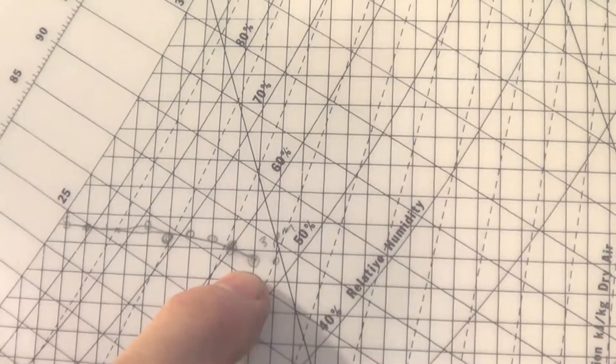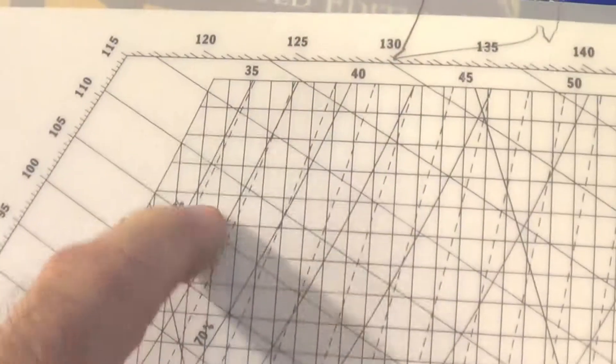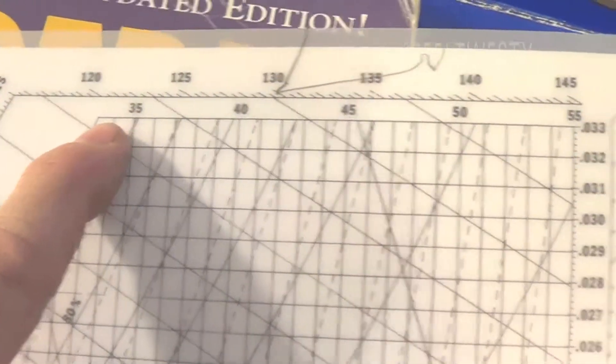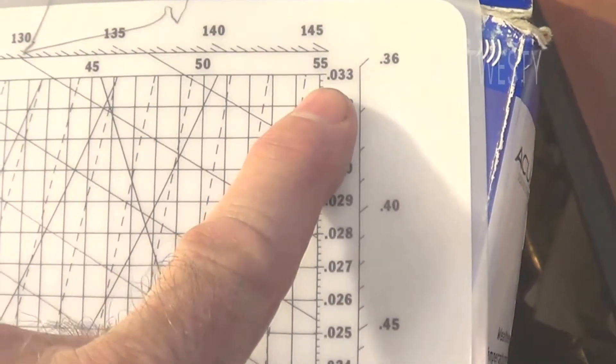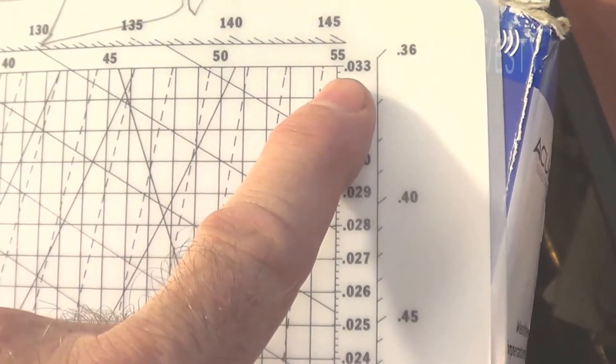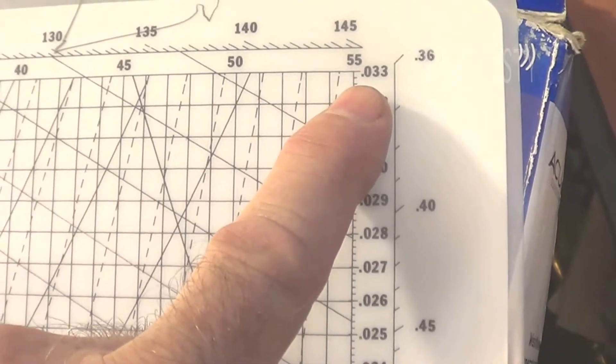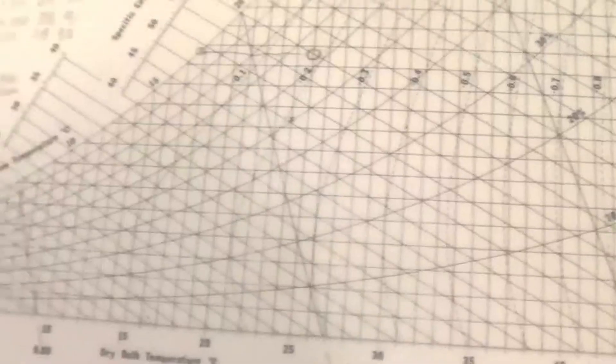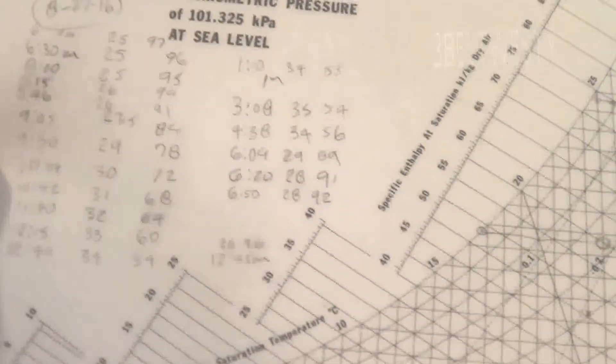you could go through and evaporate all this water and get way up to here and get up to point oh three, point oh four ratio of moisture. Now the metric psychrometric chart isn't as pretty as the one that was English for some reason.